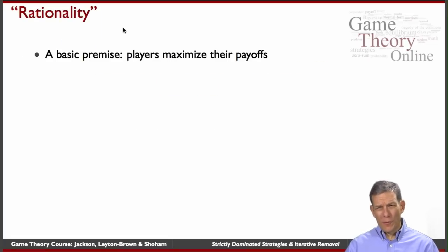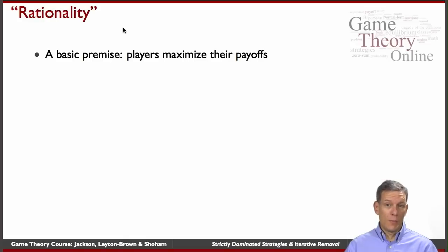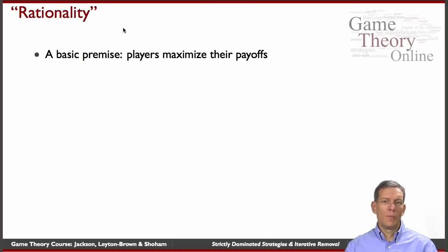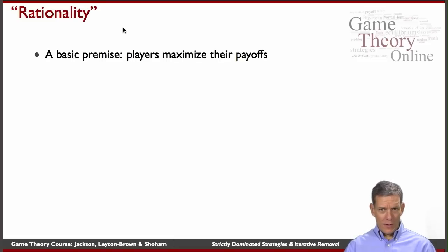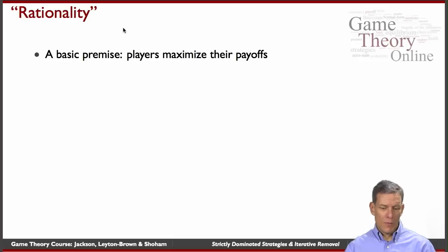When we start thinking about rationality in game theory, the basic premise is that players maximize their payoffs. It doesn't necessarily mean that they're just greedy — payoffs could reflect altruism, being public-minded, etc. But the premise is that there's some objective function that people have, and they tend to do things that will give them higher payoffs rather than lower payoffs.